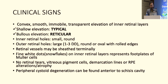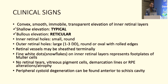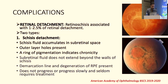Because it's retinoschisis, you can have holes in the inner layer or multiple holes in the outer layer. Outer layer holes are much more prominent — they are bigger, fewer in number, and look like large holes similar to full-thickness retinal holes. The inner layer holes resemble sieve-like retina, are easy to miss on cursory examination, and are generally multiple. Only when outer and inner layer holes are present over the same area is there a conduit for vitreous to flow from the vitreous cavity through the schisis into the sub-retinal space, producing a rhegmatogenous RD.